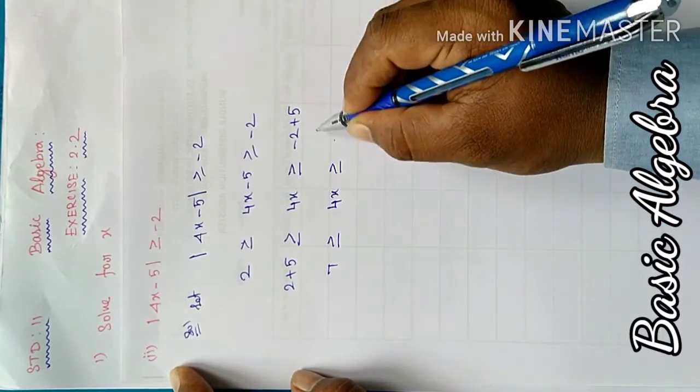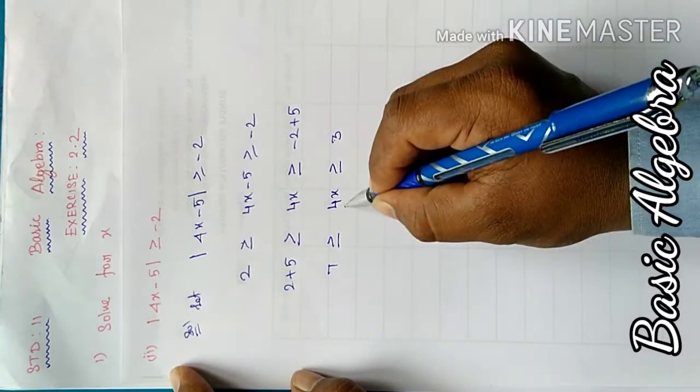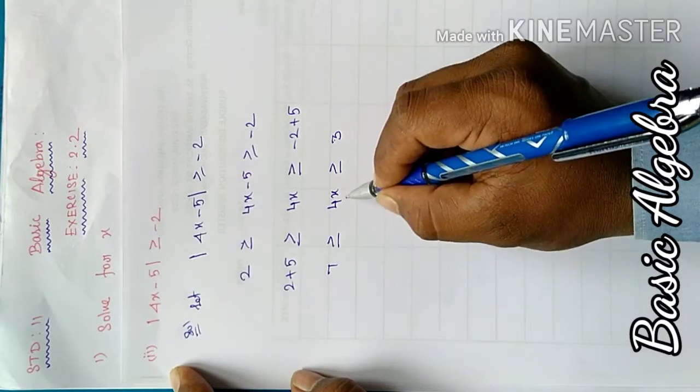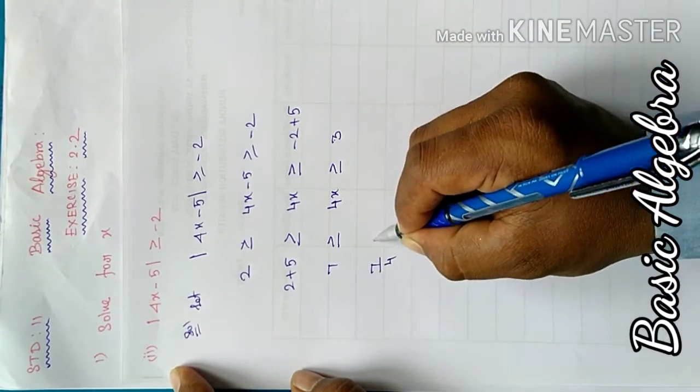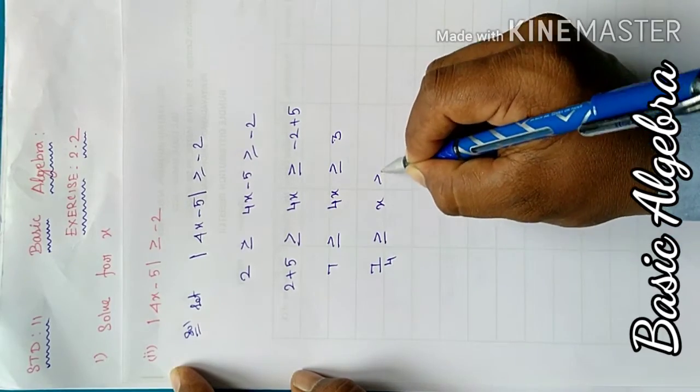Next we divide all parts by 4. Therefore: 7/4 ≥ x ≥ 3/4.